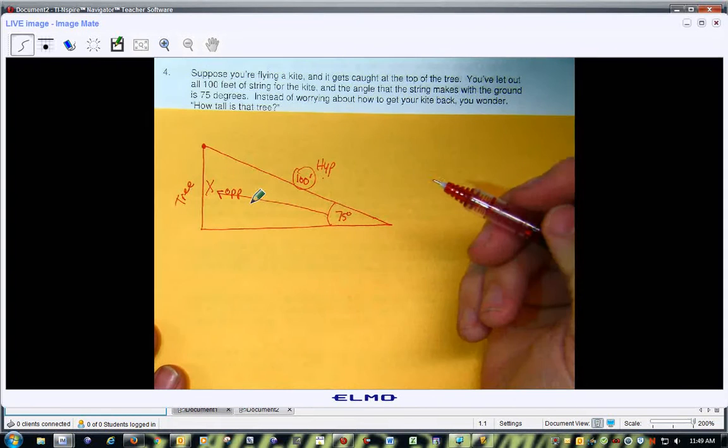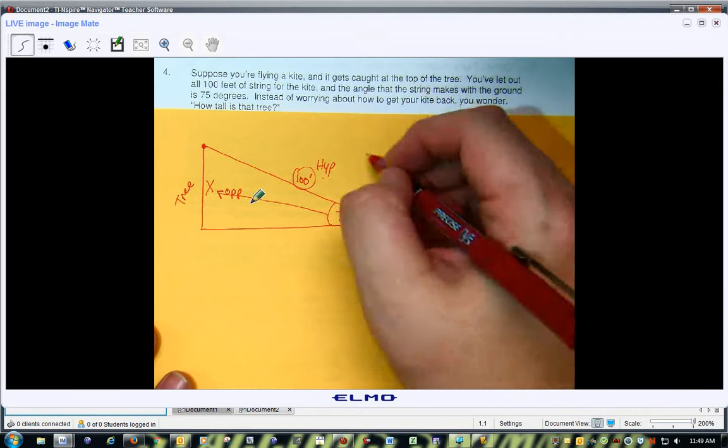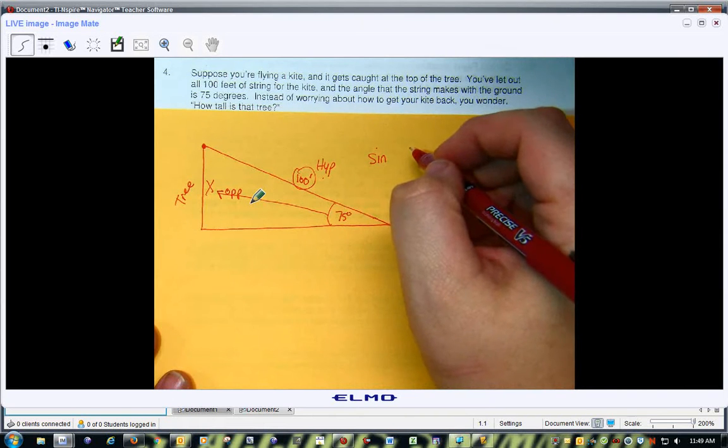So if you have opposite and hypotenuse, what are we going to use? Sine. Sine. That's okay, no worries. No, sine is opposite over hypotenuse.